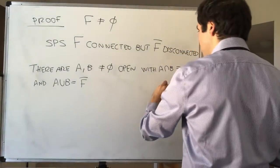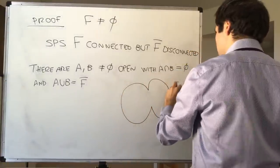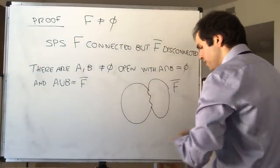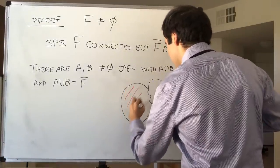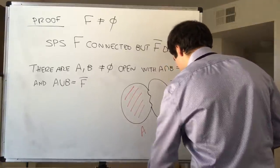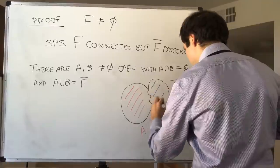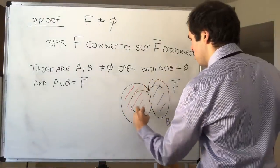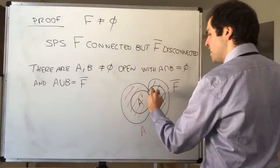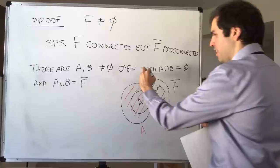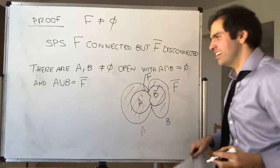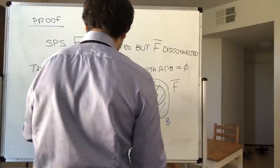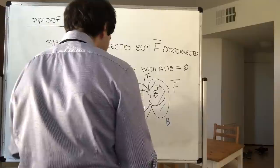We have this set f̄ and we know there's a separation — A and B — of f̄. In particular, since we have the smaller set f inside, we can consider A' = A ∩ f and B' = B ∩ f.